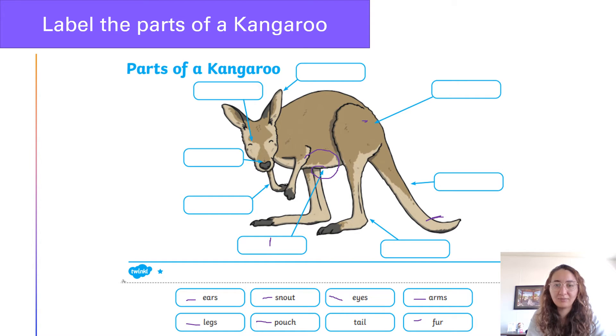So ears again. We've got snout. We've got legs. We have the tail. Then we've got the fur. What else is in there? Arms. The arms are at the top. It's all the different parts of the kangaroo.